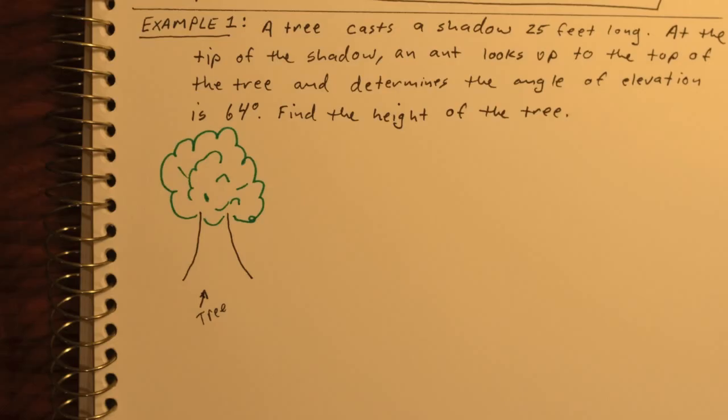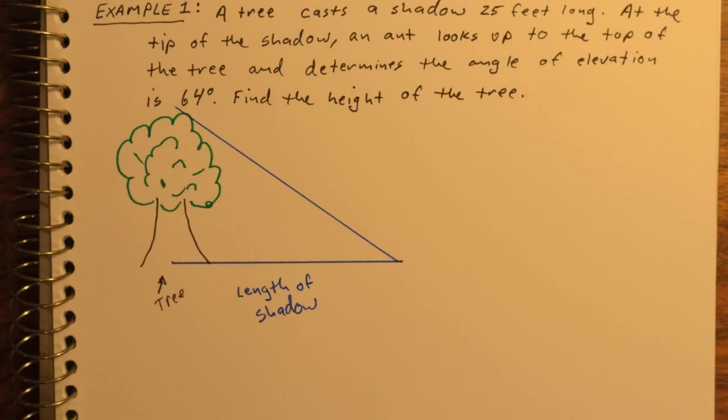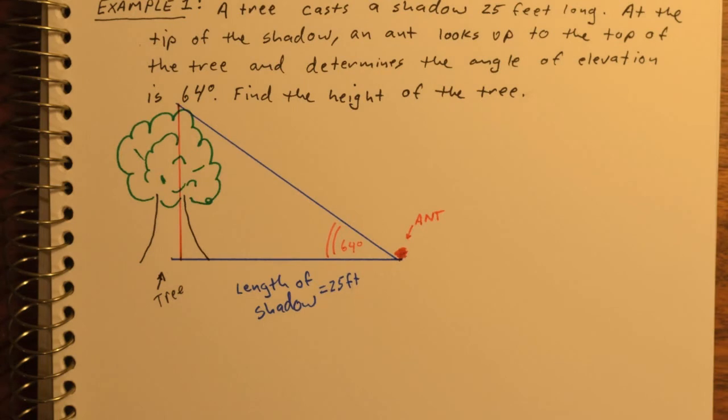Let's draw pictures. We know we have a tree casting a shadow, and the length of the shadow is 25 feet long. At the very tip of the shadow is an ant, and that ant figures out that the angle of elevation is 64 degrees. We want to find the height of the tree.